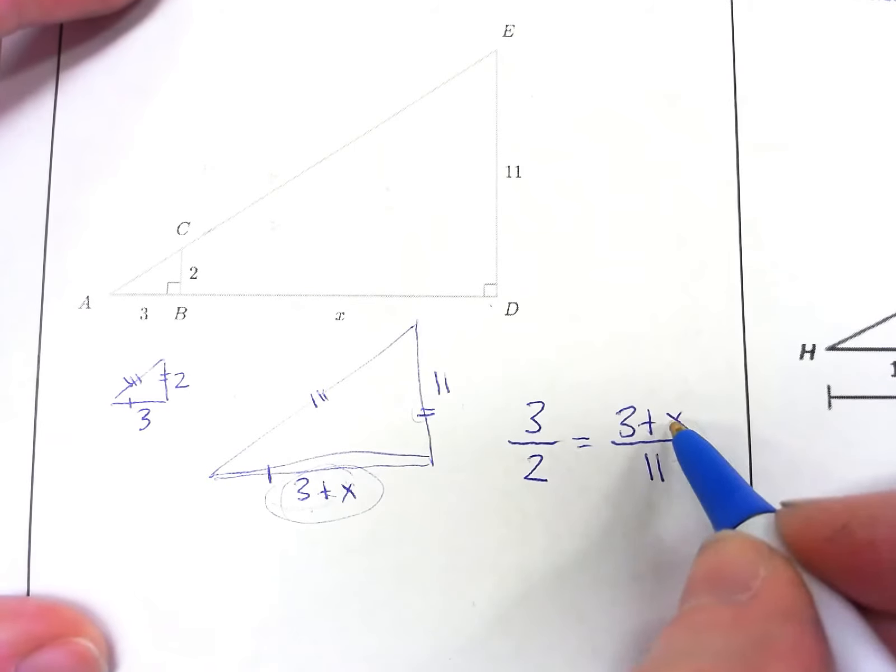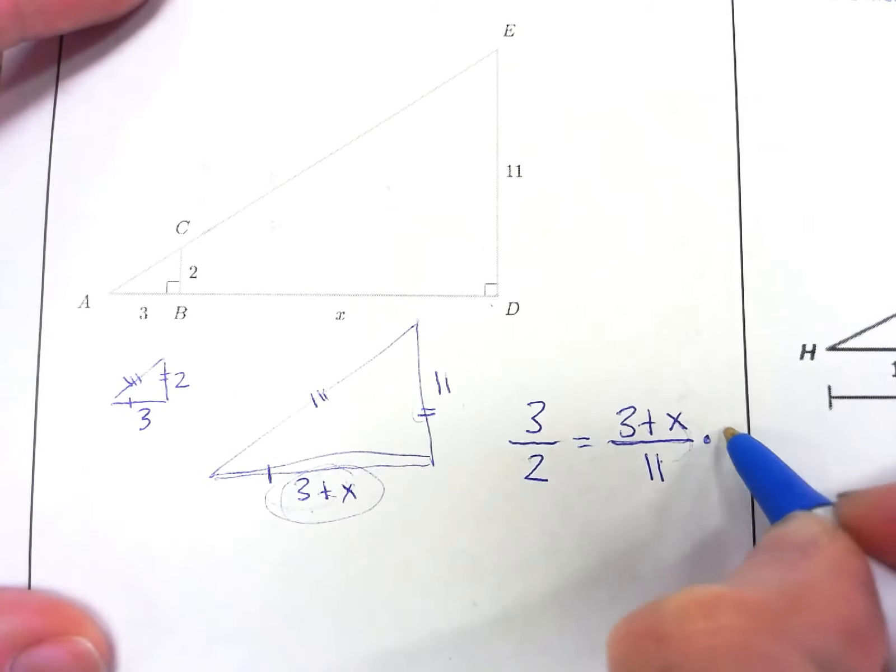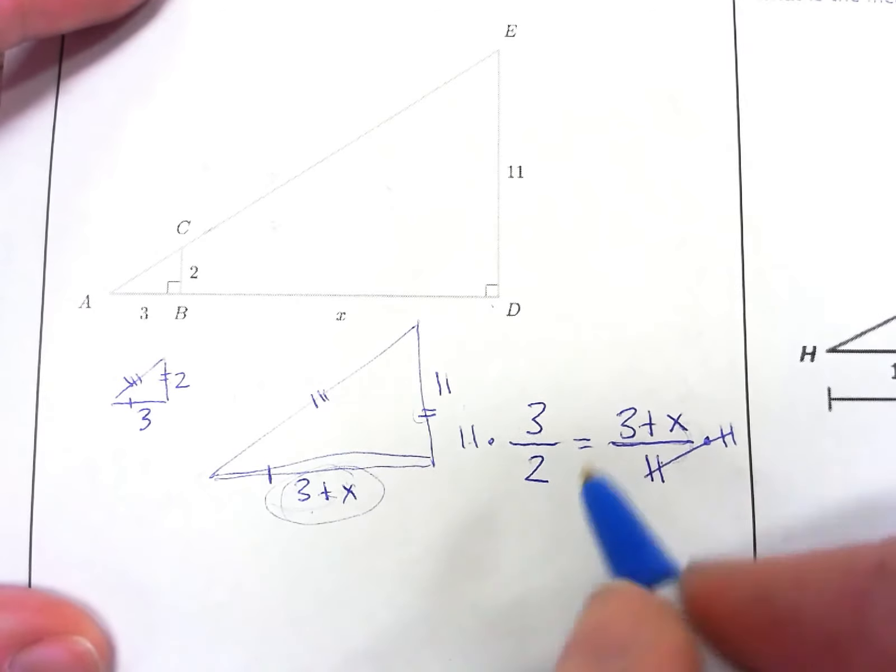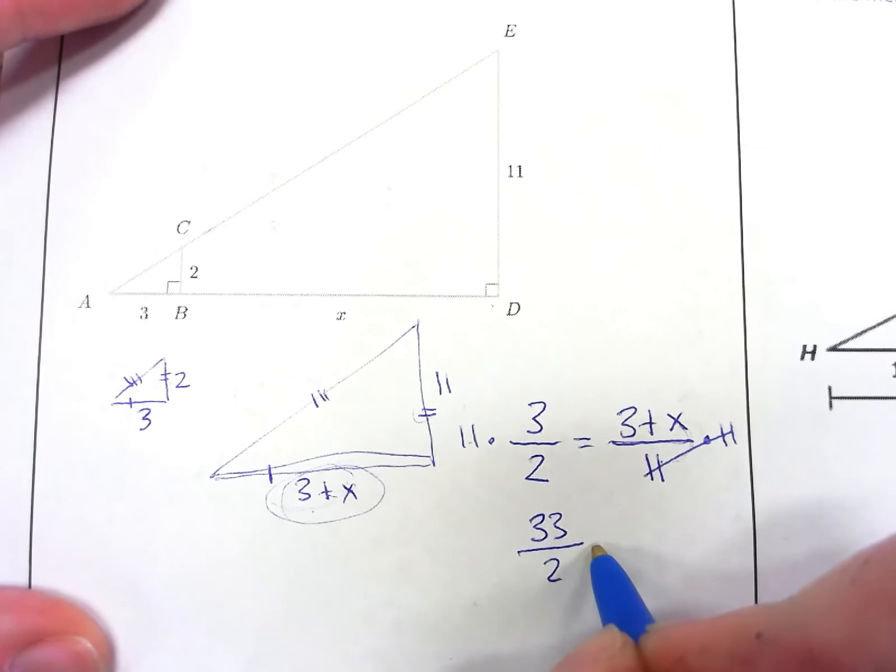And then I can just solve for x. So I need to undo the division here. So multiply by 11, multiply by 11, this cancels out. 11 times 3 would be 33, divided by 2, equals 3 plus x.